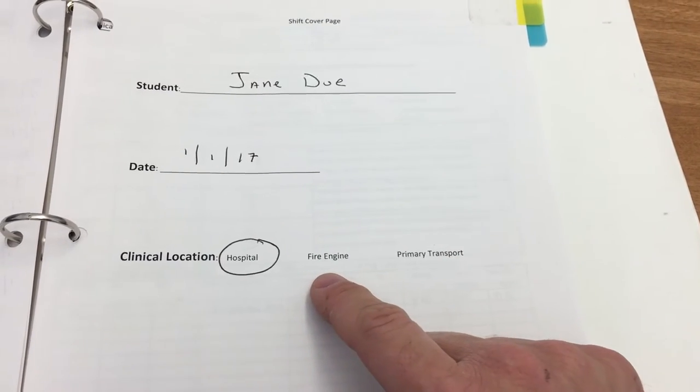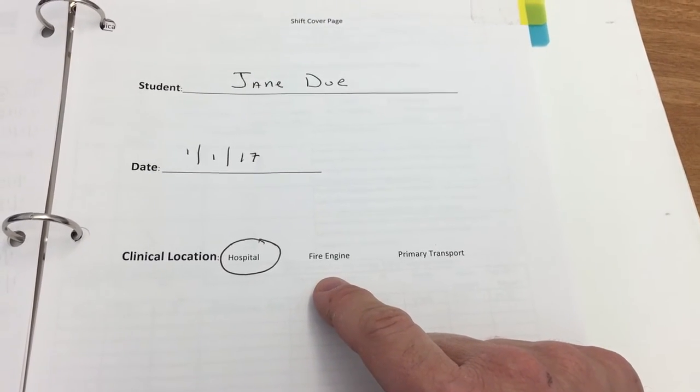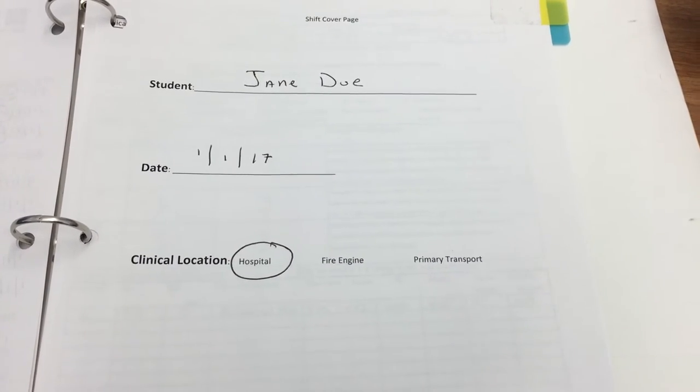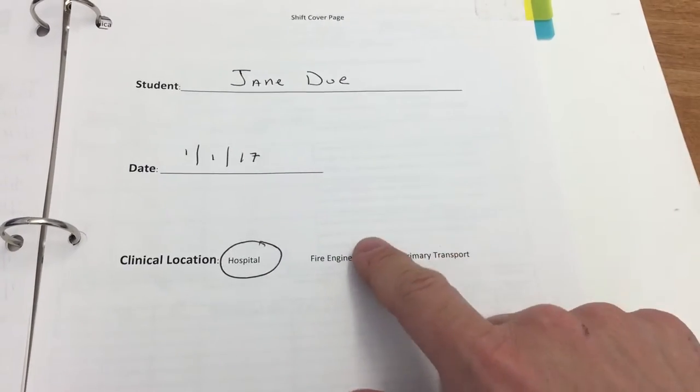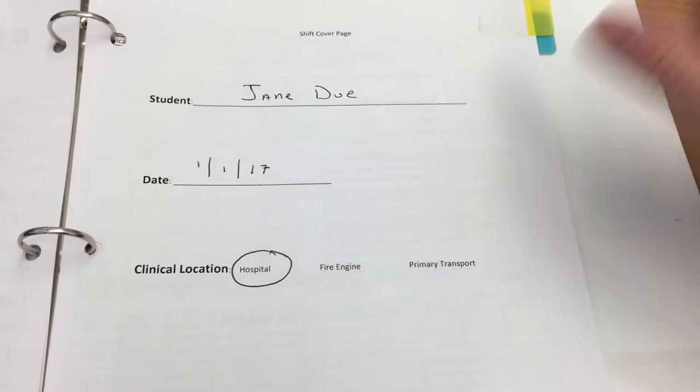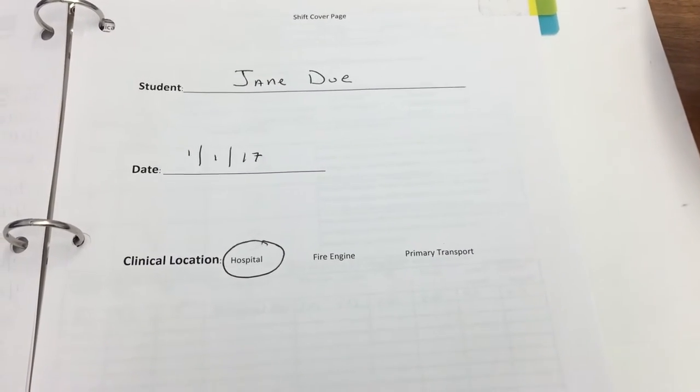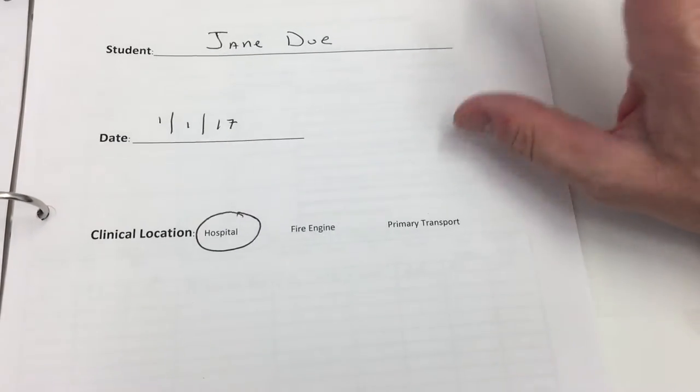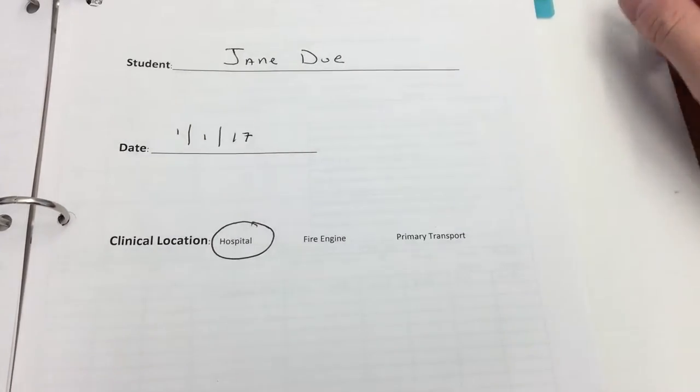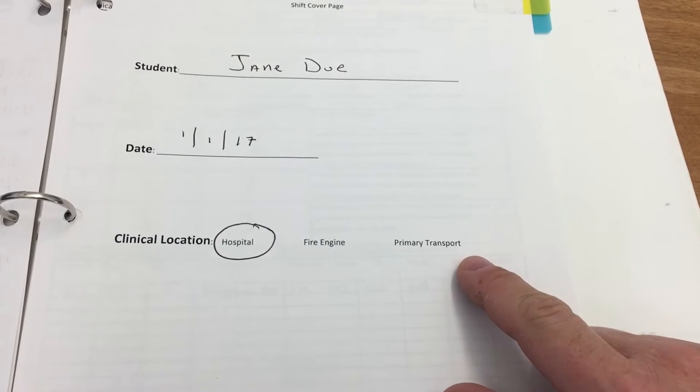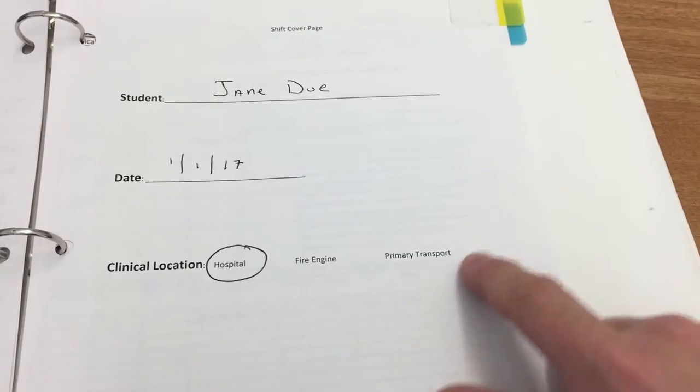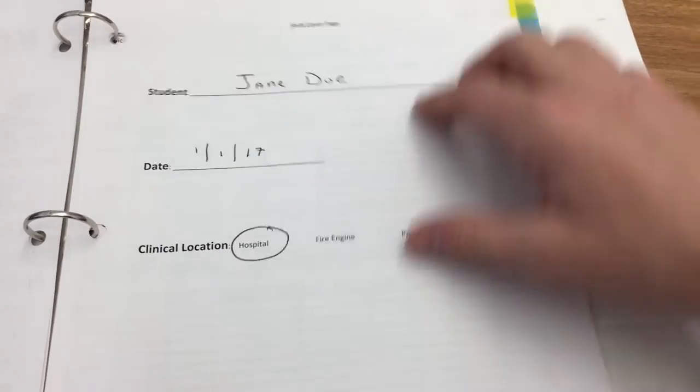You will either be in the hospital or you'll be working on a fire engine or a primary transport agency. Remember, Las Cruces fire is not a primary transport agency, even though they are a primary response agency. So if you are rotating with Las Cruces fire, you will circle this because you're not actually transporting the patient, even though you are responding, you're treating, and then you're transferring care over to a primary transport service. If you are with a service that does primary transport, then you will circle that there. So this just happens to be in the hospital.